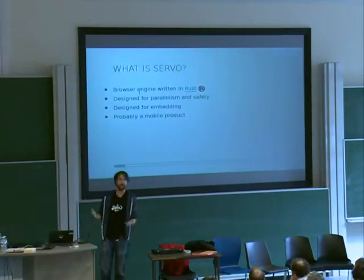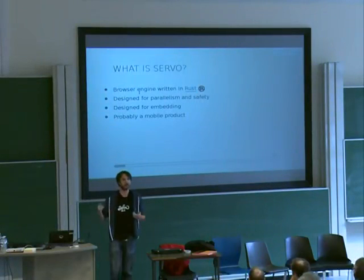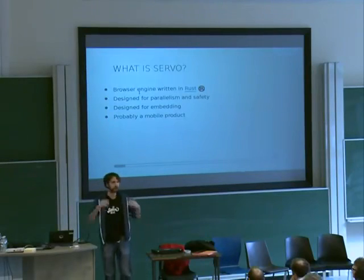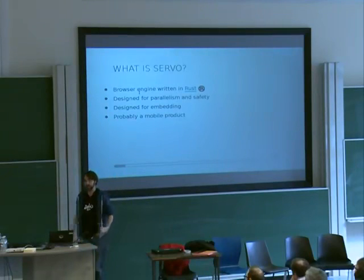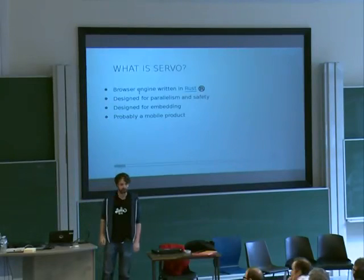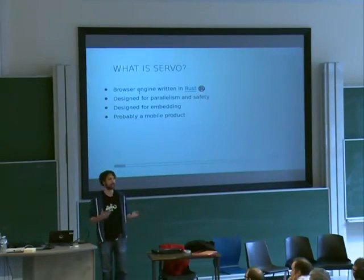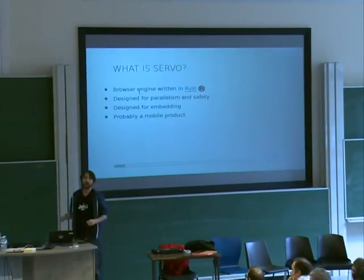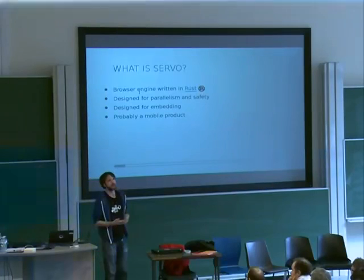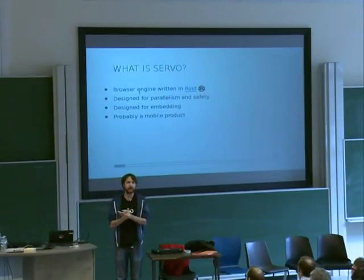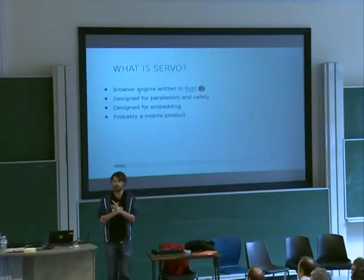Servo is a brand new browser engine. A browser engine is something like Blink, WebKit, or Gecko — so instead of the whole browser, it's just the bit that renders the website and executes the script. In particular, Servo is written in a new programming language that Mozilla is creating from scratch called Rust. We've been working on that for several years now and it's nearing version 1.0. Servo is a new engine designed to exploit modern hardware, really focusing on performance and safety.